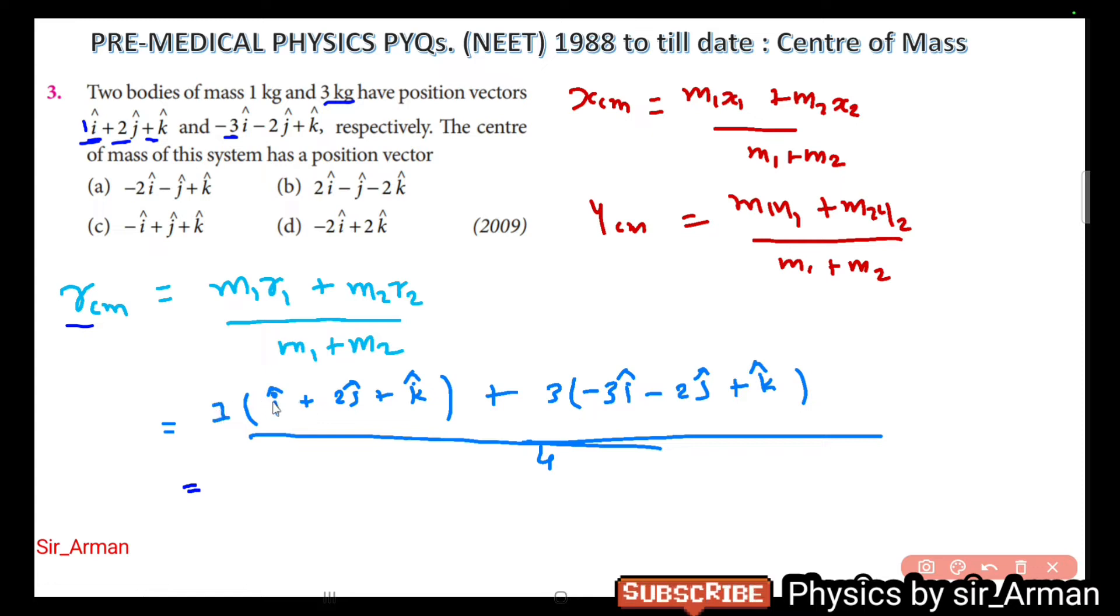So m1*r1 plus m2*r2 divided by m1 plus m2. m1 is mass 1 kg, r1 is the position vector of 1 kg body, that is i cap plus 2j cap plus k cap, plus mass m2 and r2, that is minus 3i minus 2j plus k cap. Now see what you have to do—you have to multiply first this number with all, like you were doing in lower classes.